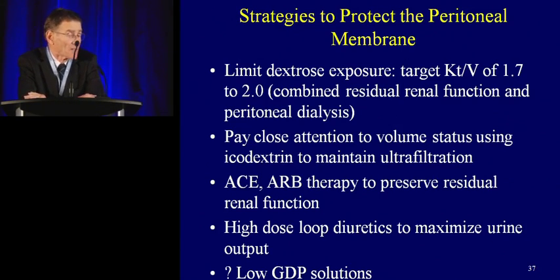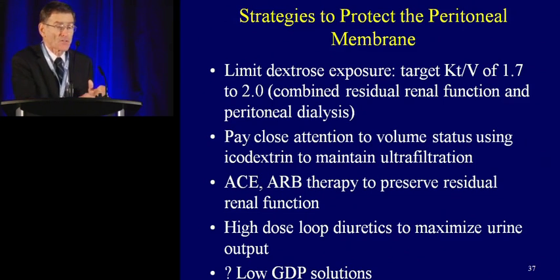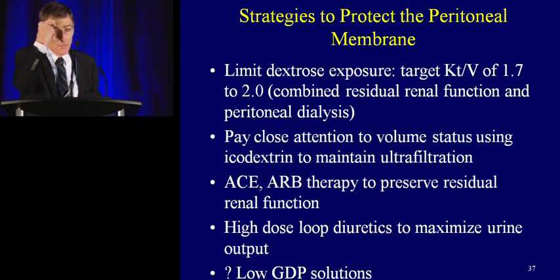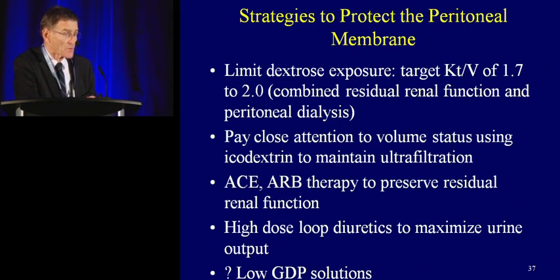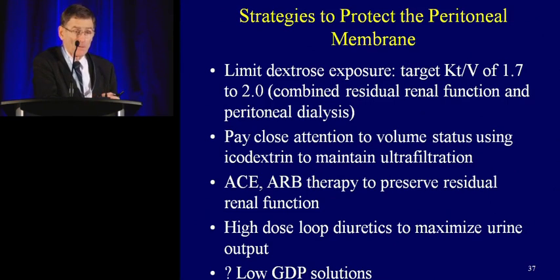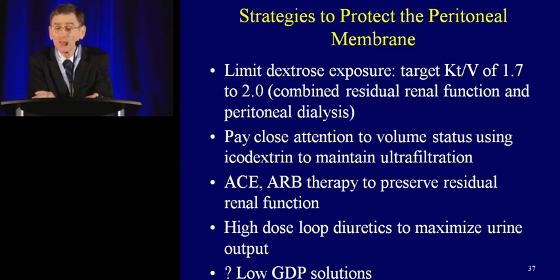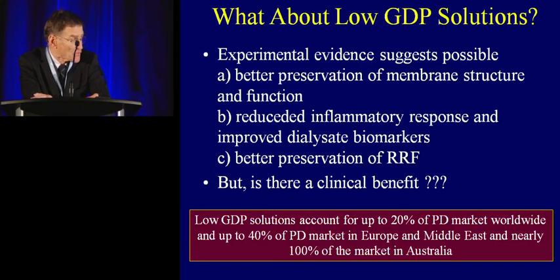Strategies to protect the peritoneal membrane: limit dextrose exposure targeting KT/V of 1.7 to 2 with no benefit beyond 2; pay close attention to volume status; use icodextrin to maintain ultrafiltration and minimize dextrose exposure; use ACE inhibitor and ARB therapy to preserve residual renal function — three randomized trials have shown these can preserve residual renal function in PD patients starting dialysis; routinely use high-dose loop diuretics to maximize urine output, reducing the need for dextrose to remove fluid. And lastly, there is the question of low GDP solutions.